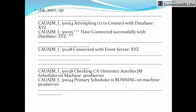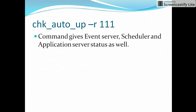By this command we can only check two statuses: the event server and the scheduler. If we want to check the status of the application server as well, we have to use the command check_auto_up -r 111. This will give the status of the application server in addition.